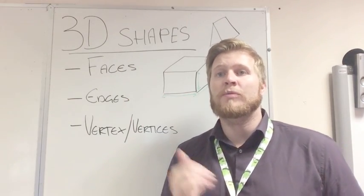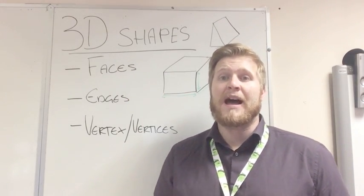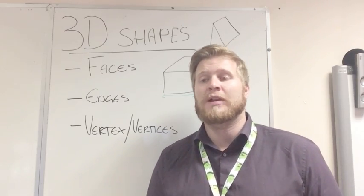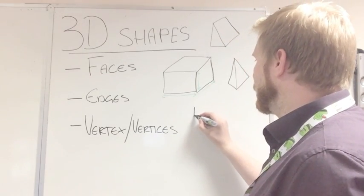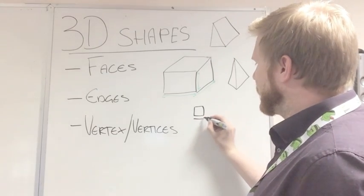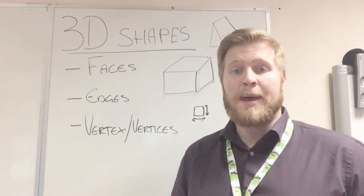Hi guys, so today we're going to be looking at 3D shapes and the different properties they have and how we distinguish the difference between them. A 2D shape is a normal shape that we draw. It's called a 2D shape because we can measure it by two dimensions: width and height.